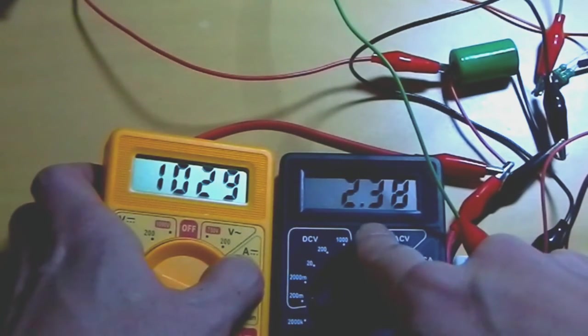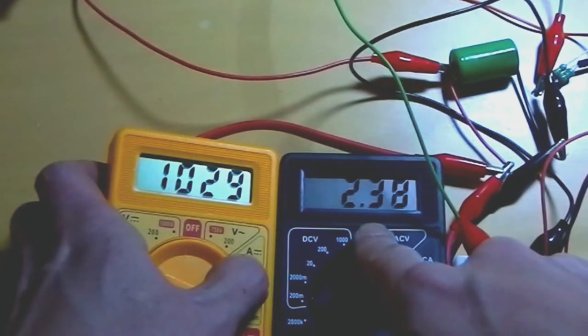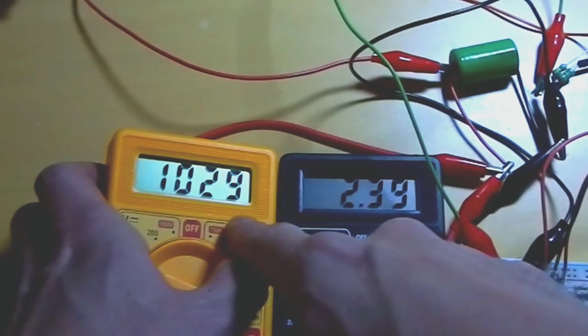The amperage drops from 8 mA to 2.3, 2.4, maybe 3 mA. And then the battery begins to charge.